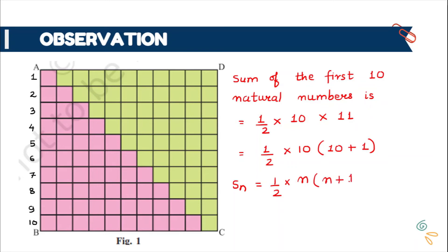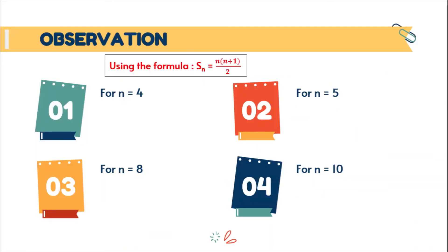So I can generalize it as sum of n natural numbers is equal to half into n times (n plus 1). So using this formula, you can find the sum of first n natural numbers. This is the generalized formula we use to find the sum of first n natural numbers.